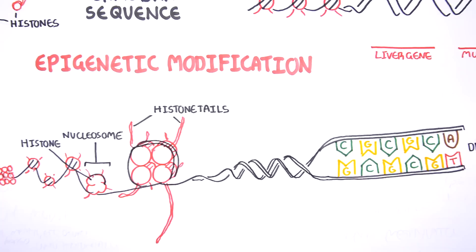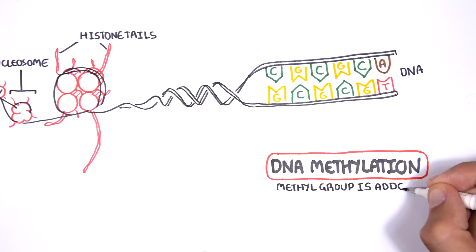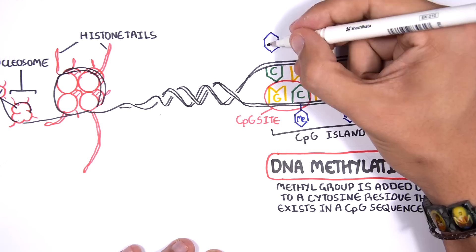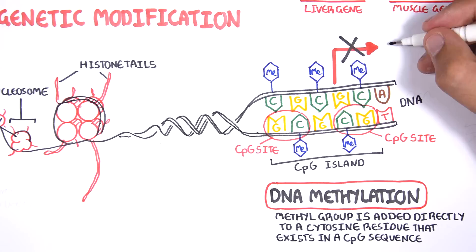The first one we will talk about is DNA methylation, where a methyl group is added directly to a cytosine residue that exists in a cytosine guanine sequence, or CpG sequence for short. So for example, here we have many CpG sites that make up a CpG island, and here the cytosines are methylated. The methylation of CpG sites in promoter regions is associated with gene silencing.